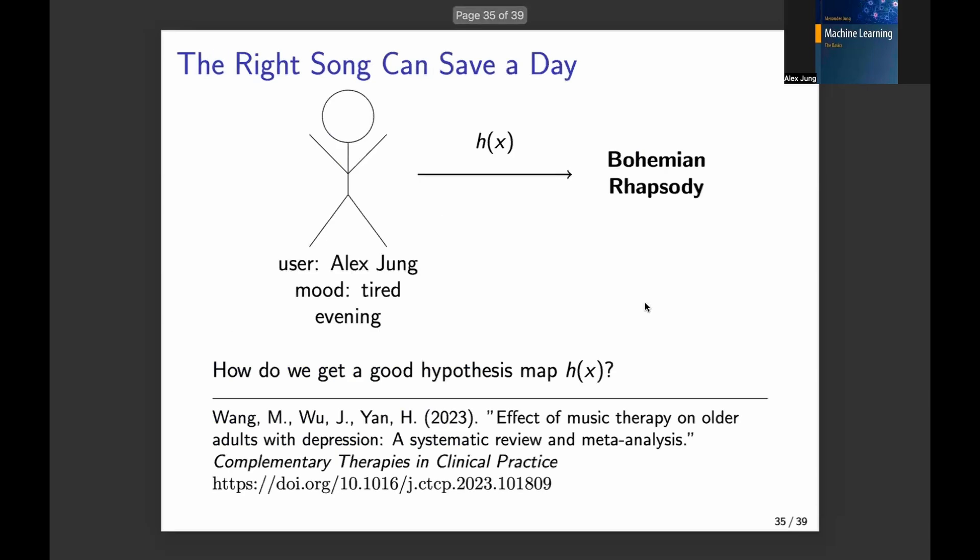Machine learning is all about learning a hypothesis map. This can be a very complex hypothesis map. For example, song recommendation. And the goal of this recommendation is to find the best song to lift the mood up.